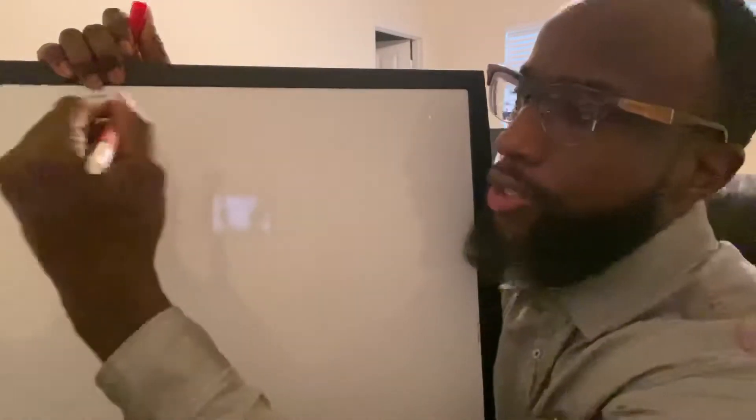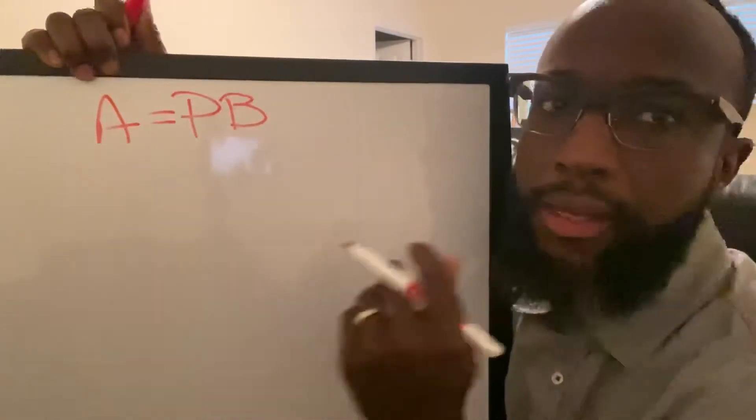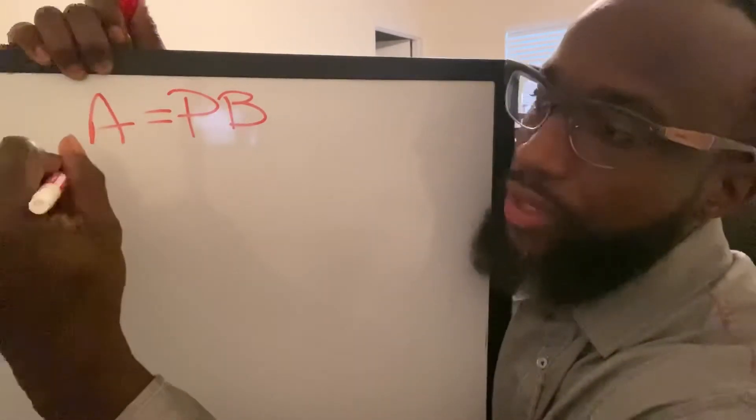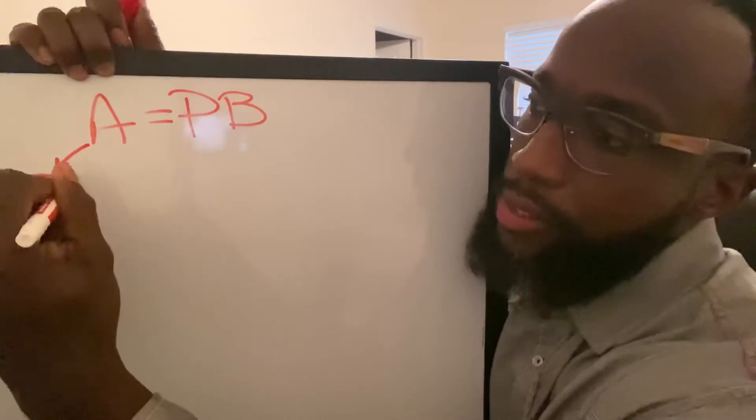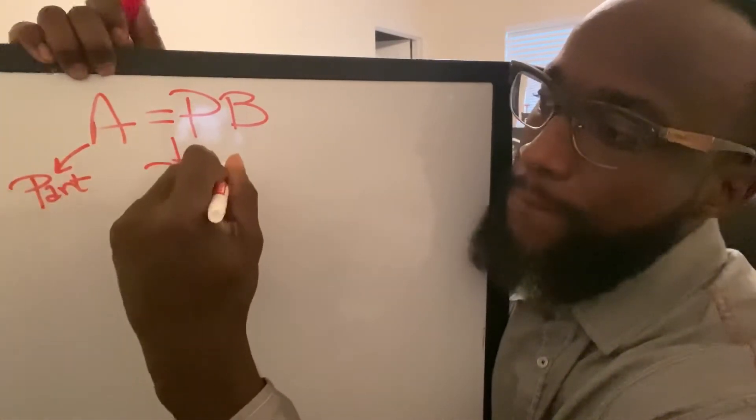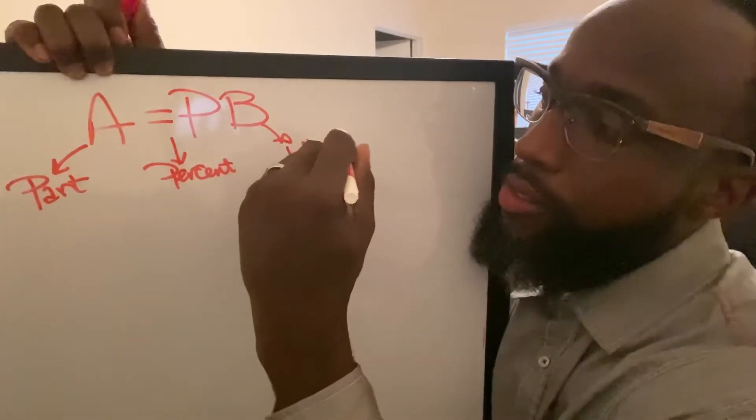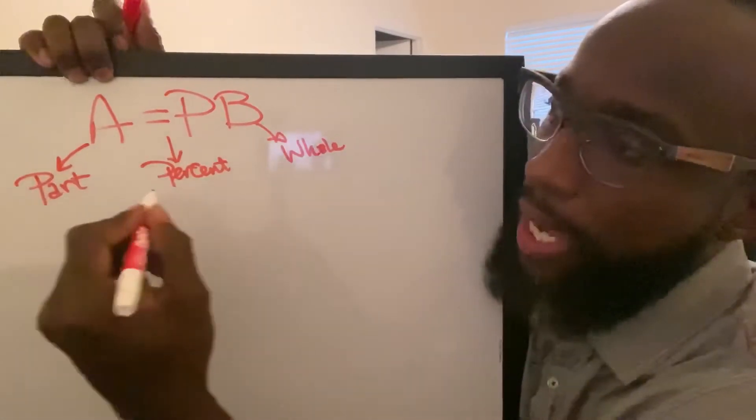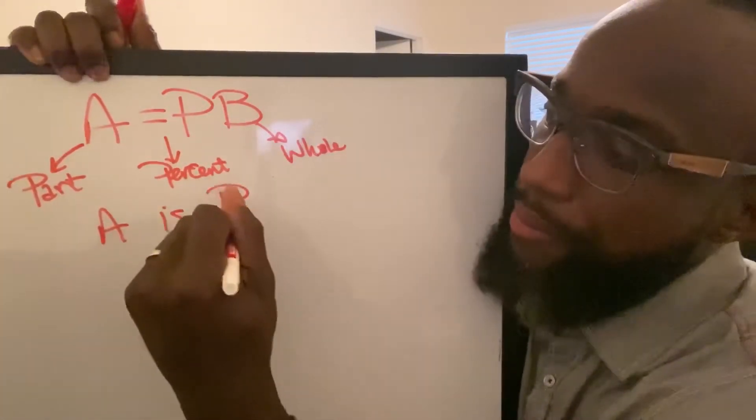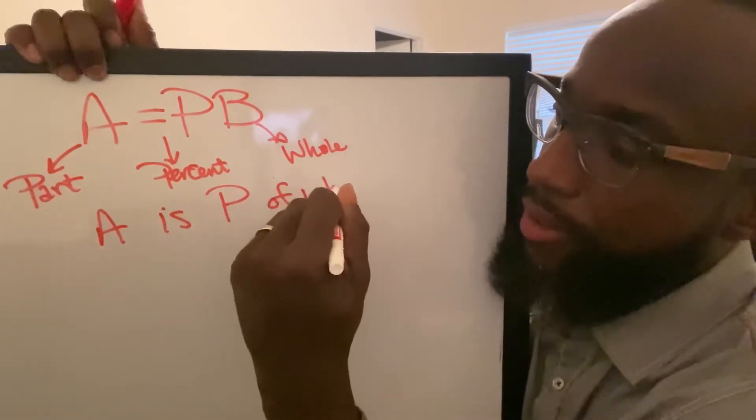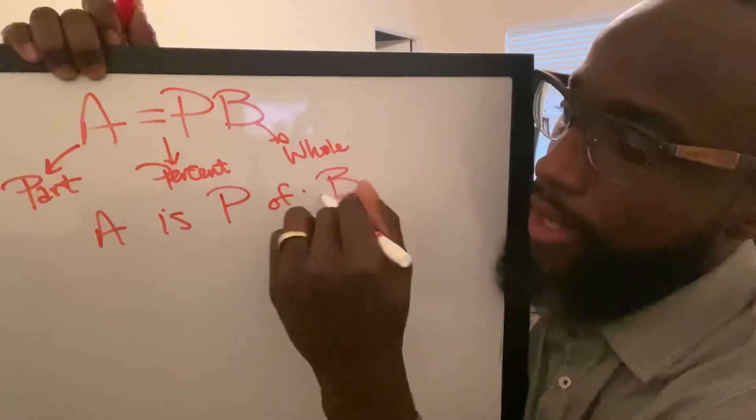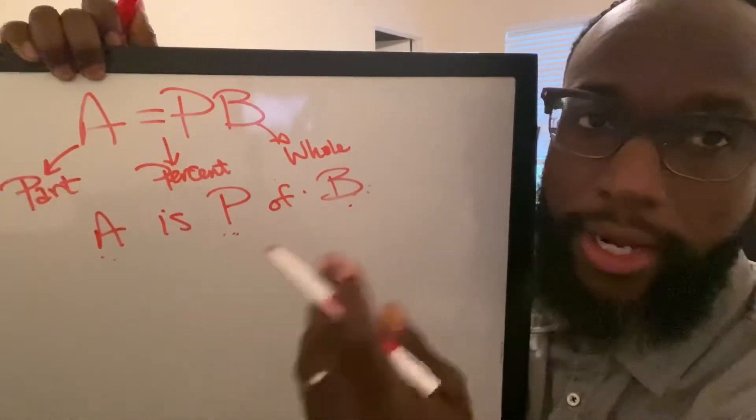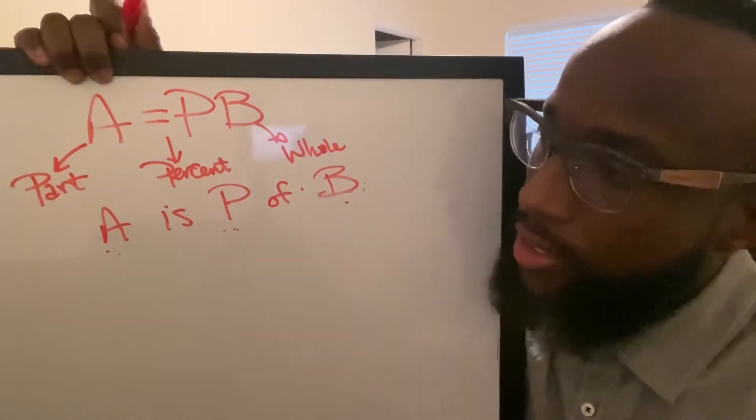So those questions arrive from this particular equation: A equals P times B. A represents the part of the number, P represents the percent, and B represents the whole number. Because remember, a percent represents a part of a whole. So essentially, that would be like what is P percent of B. A is the part, P is the percent, and B is the whole thing that you're taking a percent from.